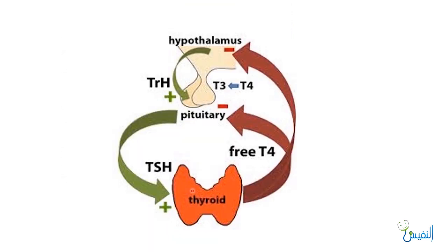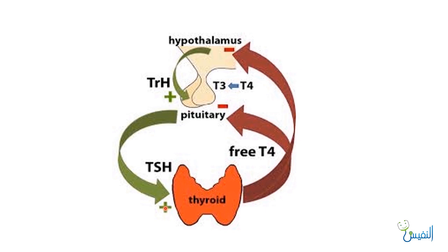There is a feedback mechanism in which the hypothalamus releases TRH, which stimulates the pituitary to release TSH (thyroid-stimulating hormone). When T3 and T4 are elevated, they suppress the hypothalamus and pituitary. When T3 and T4 are lowered, TRH and TSH are stimulated, increasing gland vascularity and secretion as a feedback mechanism.